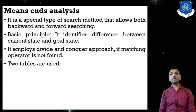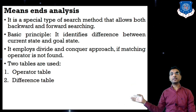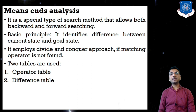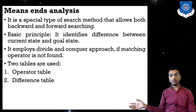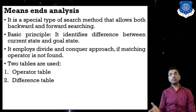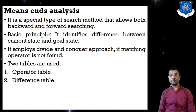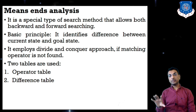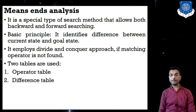Two tables are used for Means-Ends Analysis. The first table is the operator table and the second is the difference table. The operator table lists all the operators to move from initial state to goal state. The difference table denotes how far the goal state is and which operators should be applied to achieve it. This selection of operators from a difference table was not available in any previous heuristic search method.